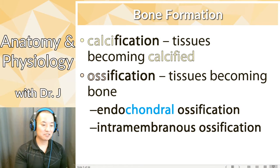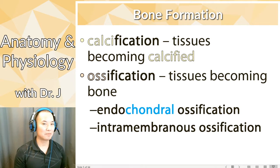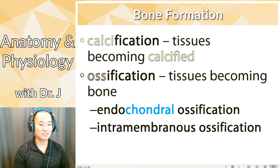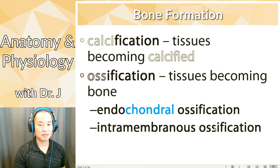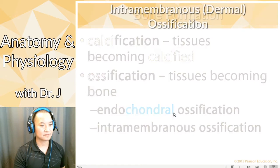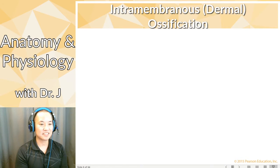And then you have intramembranous ossification. A membrane is generally a flat sheet of something, and intra means within, so it's within some membrane. Both of these involve something becoming bone. Now let's talk about intramembranous, also called dermal ossification.